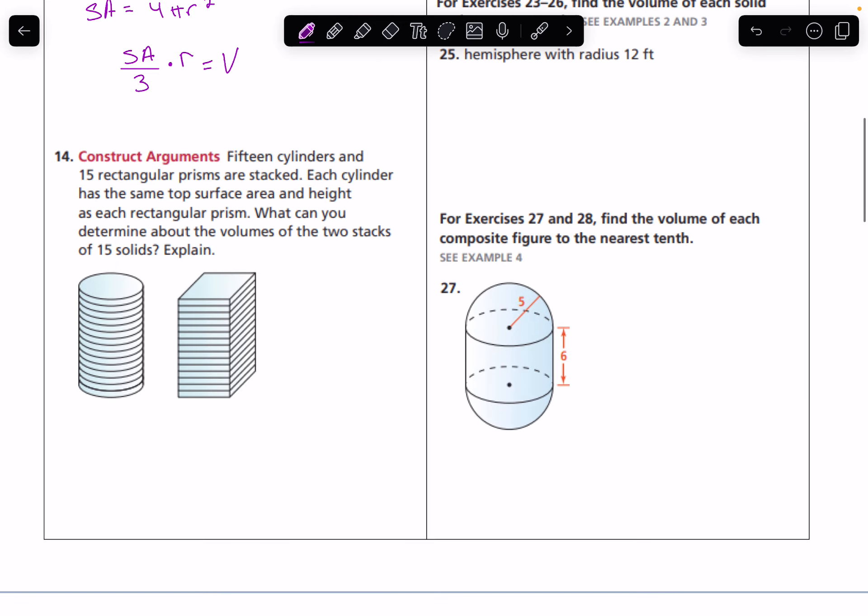Number 14, 15 cylinders and 15 rectangular prisms are stacked. Each cylinder has the same top surface area and height as each rectangular prism. What can you determine about the volumes of the two stacks of 15 solids? Well, if they've got the same top surface area, so the same surface area at those cross sections, then they have the same volume because of Cavalieri's principle.